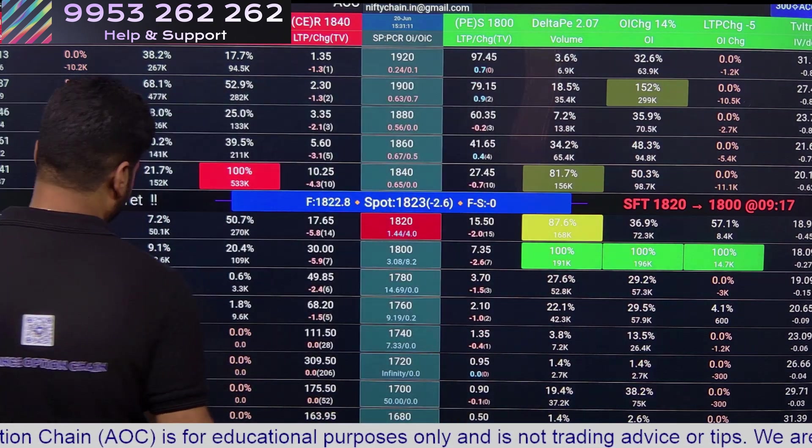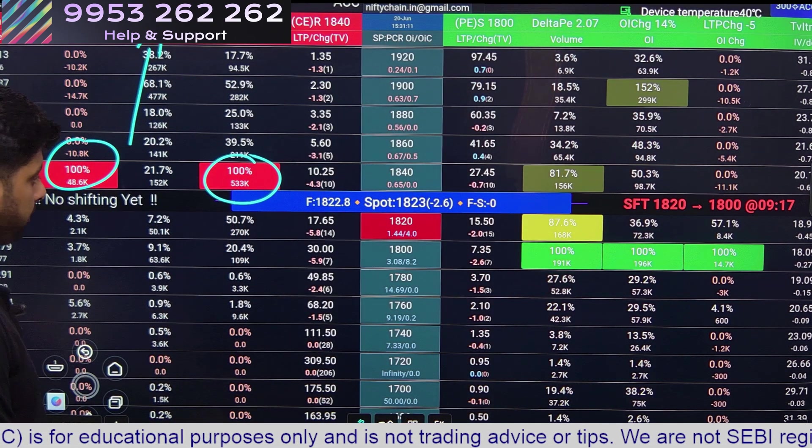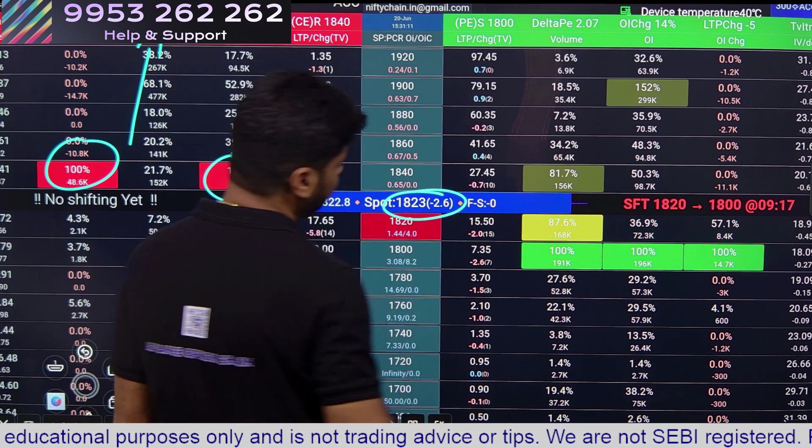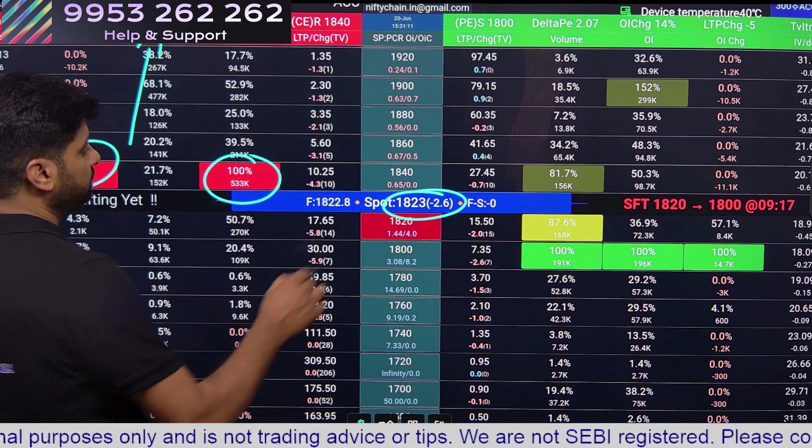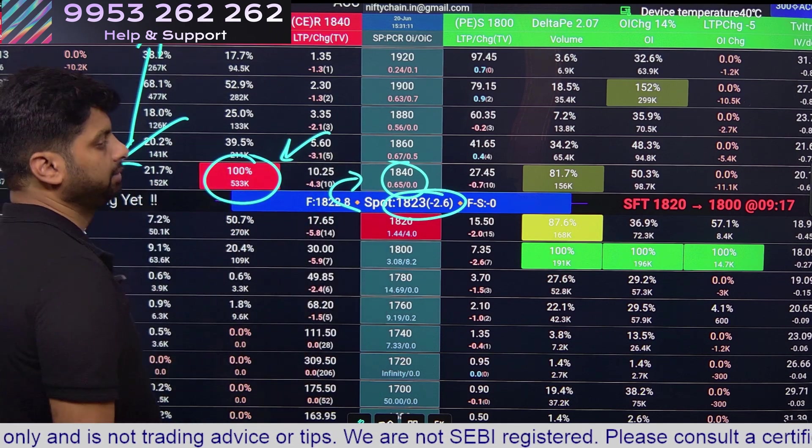To start with, let's look at call side. Now we are at 1823, which strike price is nearest with maximum volume or OI change.